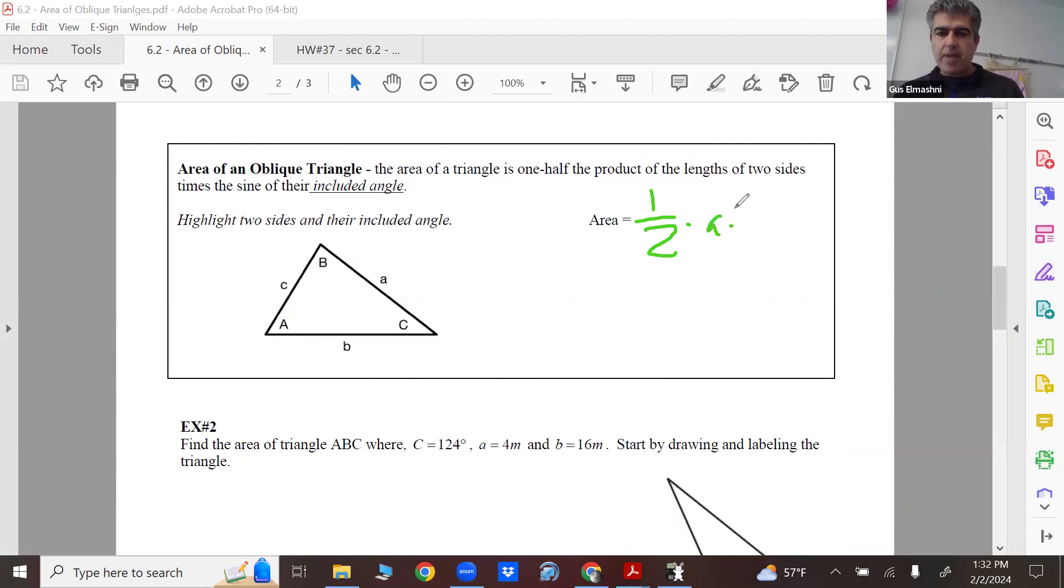And here's the more efficient way: one half times AB times sine C, or one half times BC times sine A, or one half times AC times sine B. So essentially you do this as part of an SAS case.